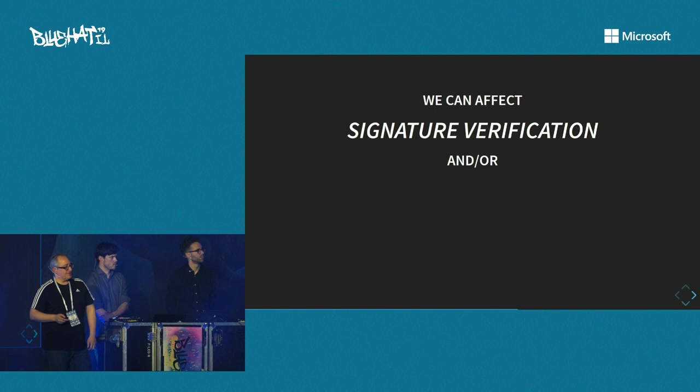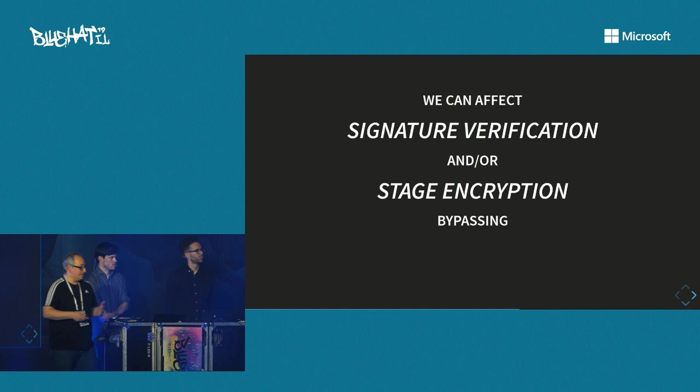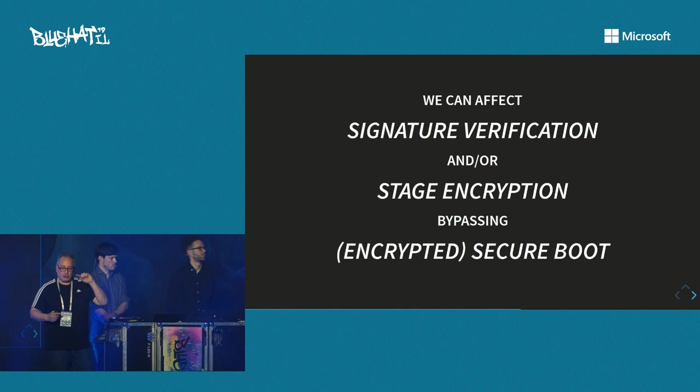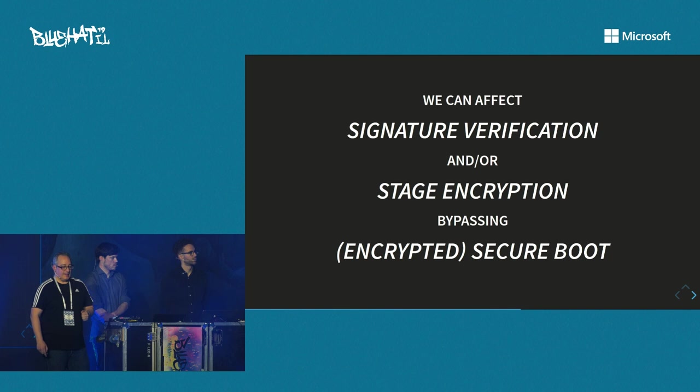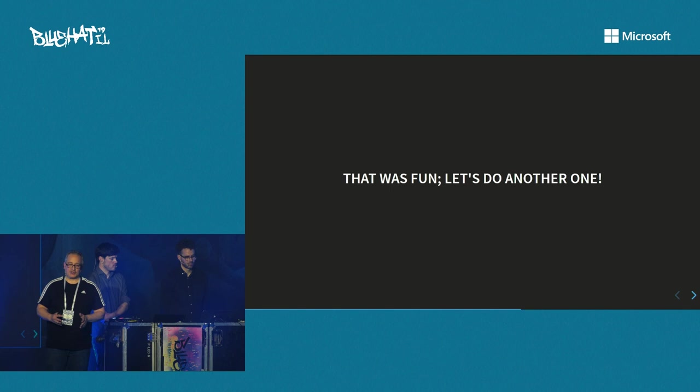With fault injection able to alter hardware behavior, we can attack while bytes are being transferred. If secure boot is enabled — a 1 in OTP — you might be able to toggle that bit from 1 to 0 while it's being transferred to the OTP controller, while it's being processed on the controller, or while it's being transferred to the shadow register. Depending on whether you can toggle one or both bits in a single glitch, you can affect signature verification and stage encryption, potentially bypassing both secure boot and encrypted secure boot. We know this is doable from our experience, though we won't demonstrate it on stage here.